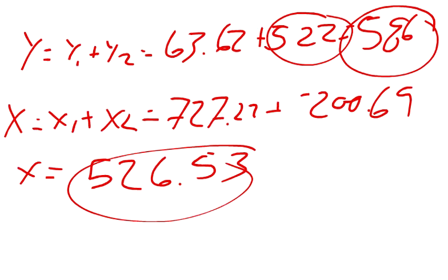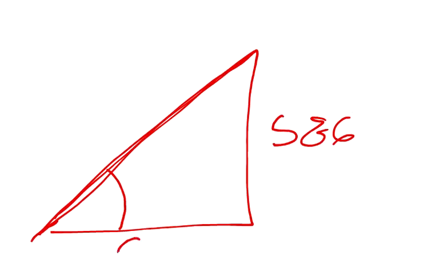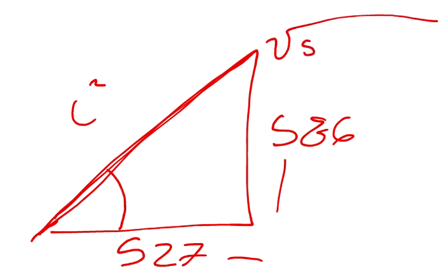And we say 527 squared plus 586 squared is going to give us this squared. So we take the square root of 527 squared plus 586 squared to get our displacement. And that answer is approximately 787.8 miles.